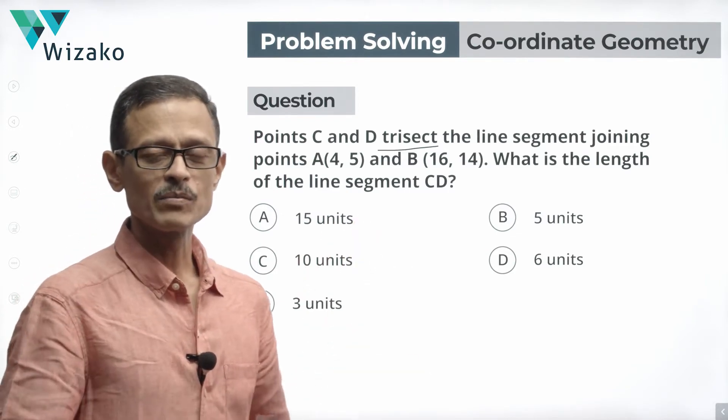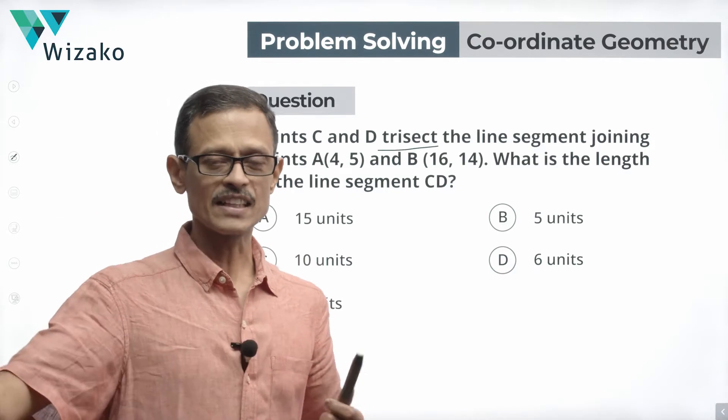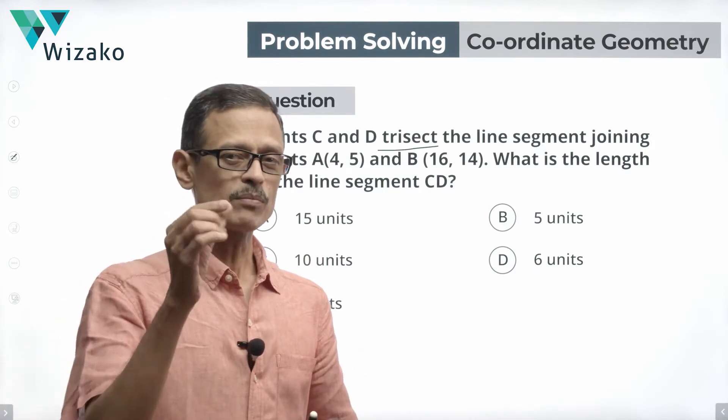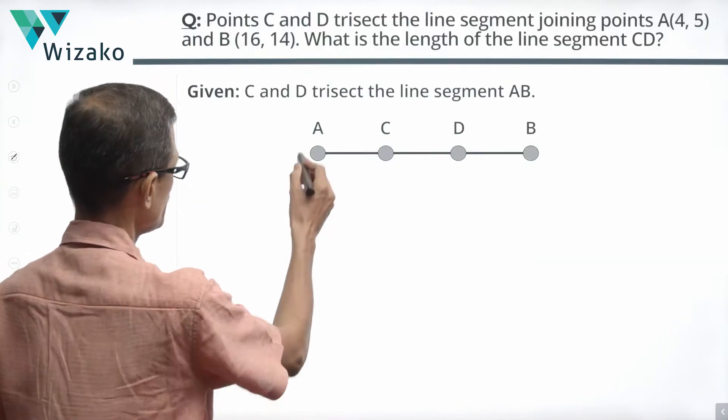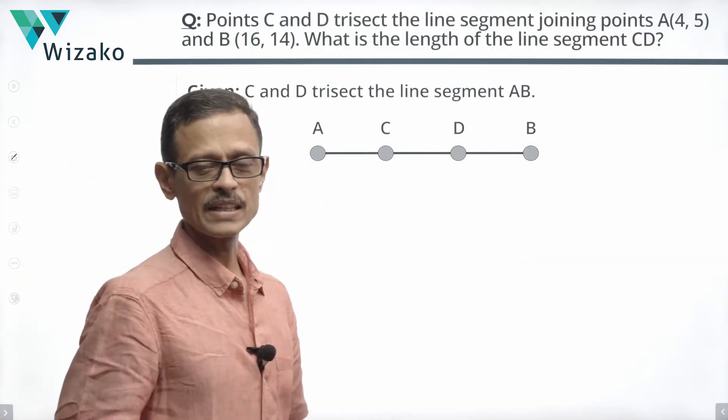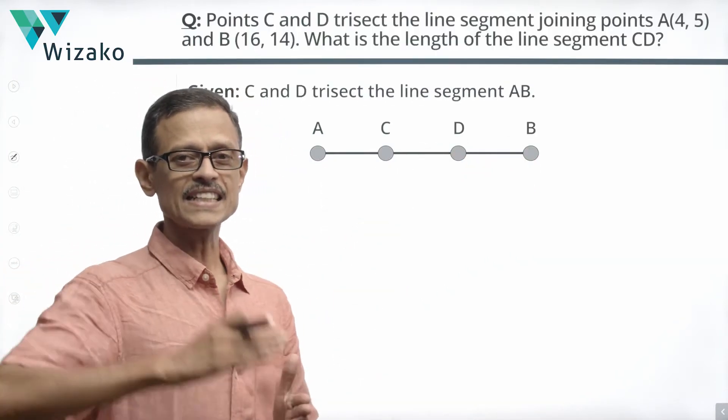Let's first place these points A, B, C and D on a line segment and check out what we mean by C and D trisect this line segment AB. Line segment AB has A and B as the endpoints. C and D trisect this line segment.